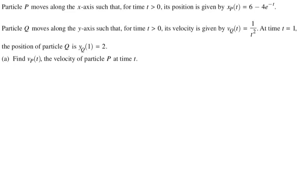Particle P moves along the x-axis such that for time t greater than zero, its position is given by x_p(t). I hate that they're using these subscripts for everything, but they've been doing it for a couple years now. x_p(t) equals six minus four e to the negative t. Particle Q moves along the y-axis. So one of them is moving horizontally, the other one's moving vertically.